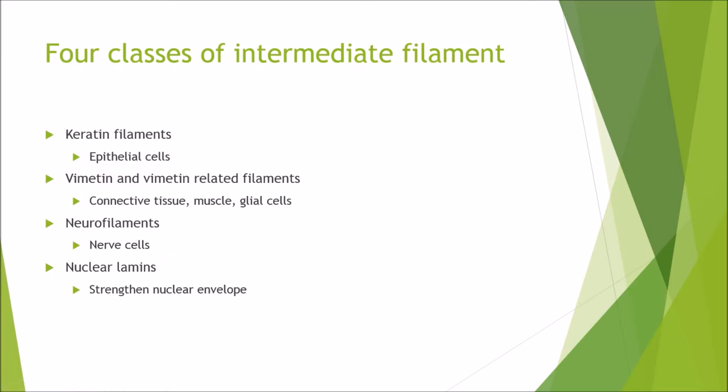There are four classes of intermediate filaments. Keratin filaments are mainly found in epithelial cells. Vimentin and vimentin-related filaments are found in connective tissue, muscle, and glial cells. Neurofilaments are found in nerve cells. Nuclear lamins are found in the nuclear envelopes of cells.